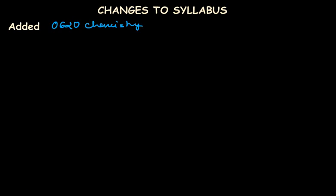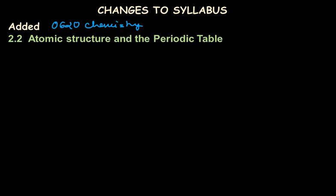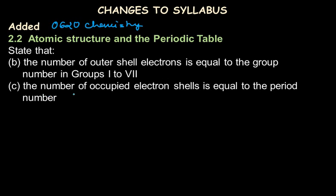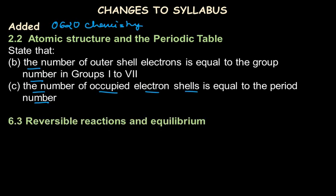The first addition is to the topic of atomic structure and the periodic table, where it is now specified that the number of outer shell electrons is equal to the group number in groups one to seven, and the number of occupied electron shells is equal to the period number. These were taught indirectly before but are now explicitly specified in the syllabus.